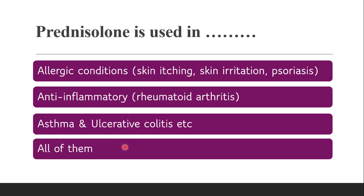Next question: prednisolone is used in — whether it is used in allergic conditions, as an anti-inflammatory, or in treatment of asthma or ulcerative colitis. The correct answer is all of them. Prednisolone, like cortisone and hydrocortisone, is a glucocorticoid and is used in the same conditions as other glucocorticoids.